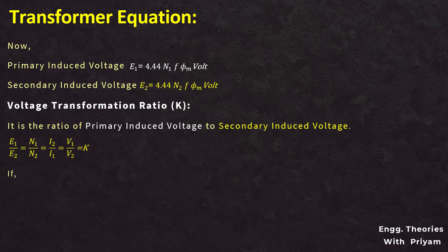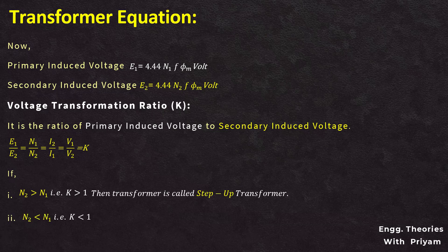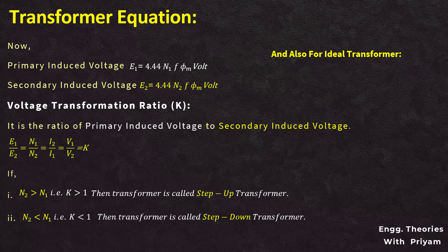If N2 is greater than N1 then k is greater than 1 and the transformer is called a step-up transformer. If N2 is less than N1 then k is less than 1 and the transformer operates as a step-down transformer. For the ideal transformer, input volt-ampere equals output volt-ampere: V1·I1 = V2·I2, which simplifies to I2 by I1 equals V1 by V2, which is equal to the inverse of the voltage transformation ratio, 1 by k.